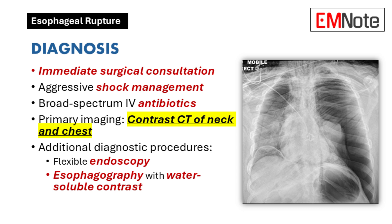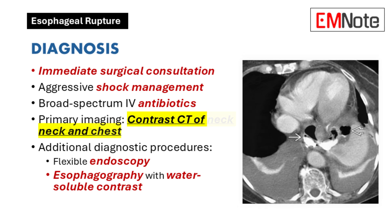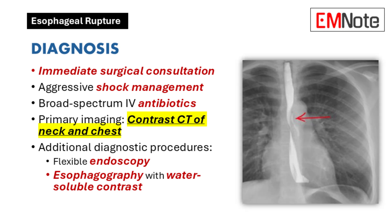Diagnosing esophageal rupture requires prompt and thorough evaluation. If perforation is suspected, immediate surgical consultation is essential. Initial management focuses on stabilizing the patient, addressing shock, and administering broad-spectrum antibiotics. A contrast-enhanced CT scan of the neck and chest is the primary diagnostic tool. If the CT scan is inconclusive but clinical suspicion remains high, additional tests such as endoscopy or a contrast esophagogram may be performed.